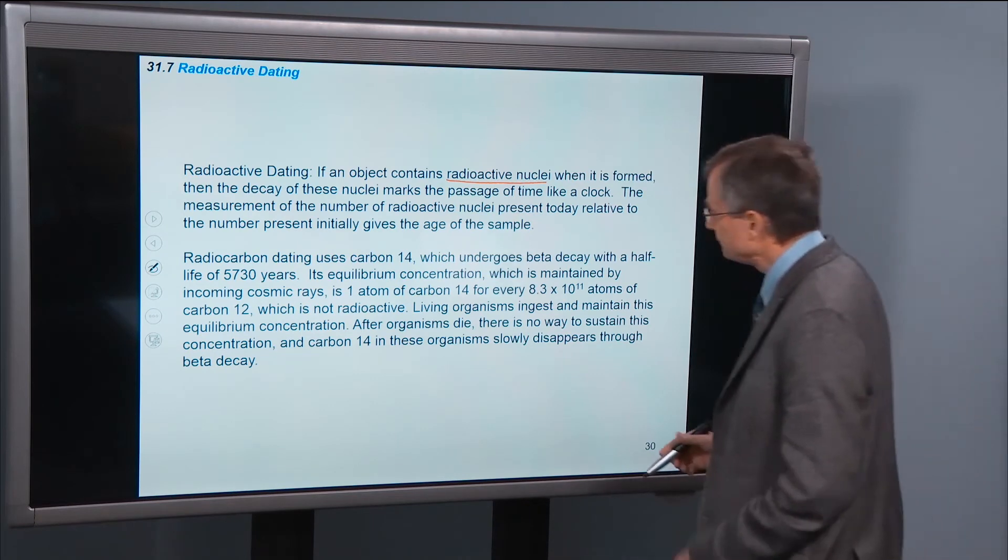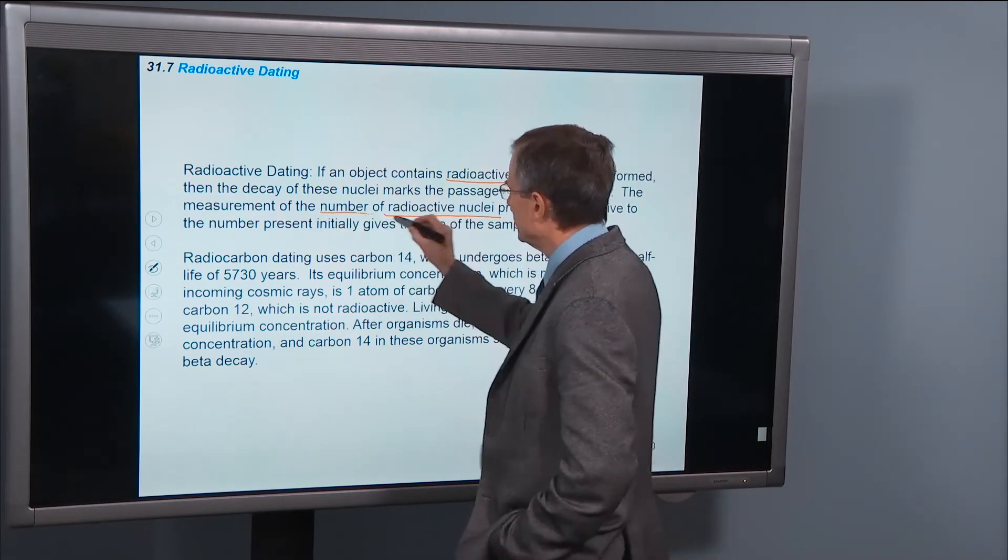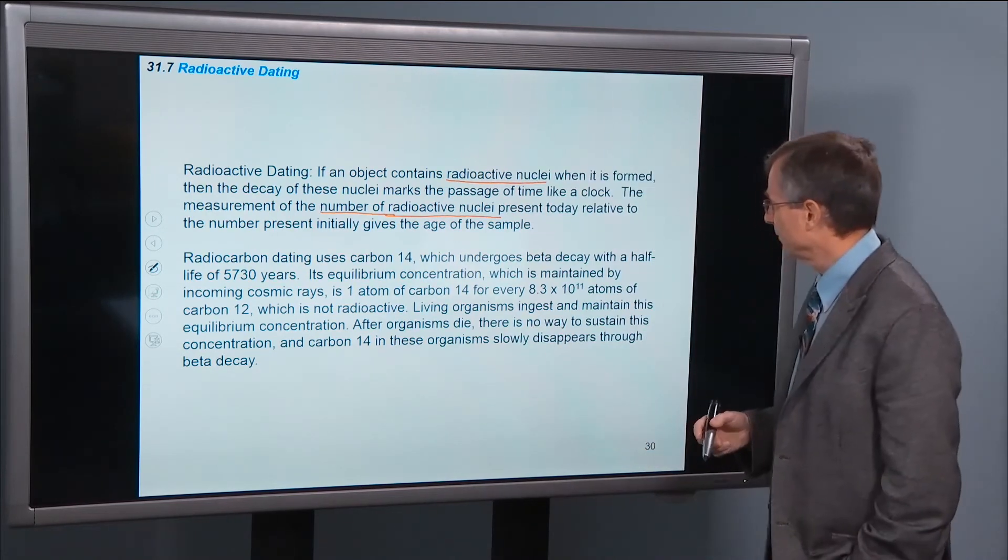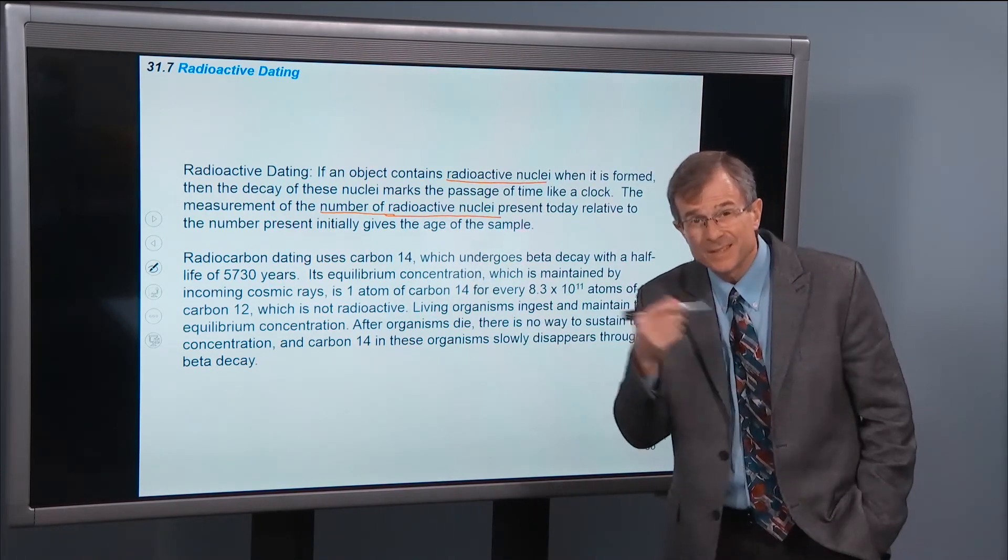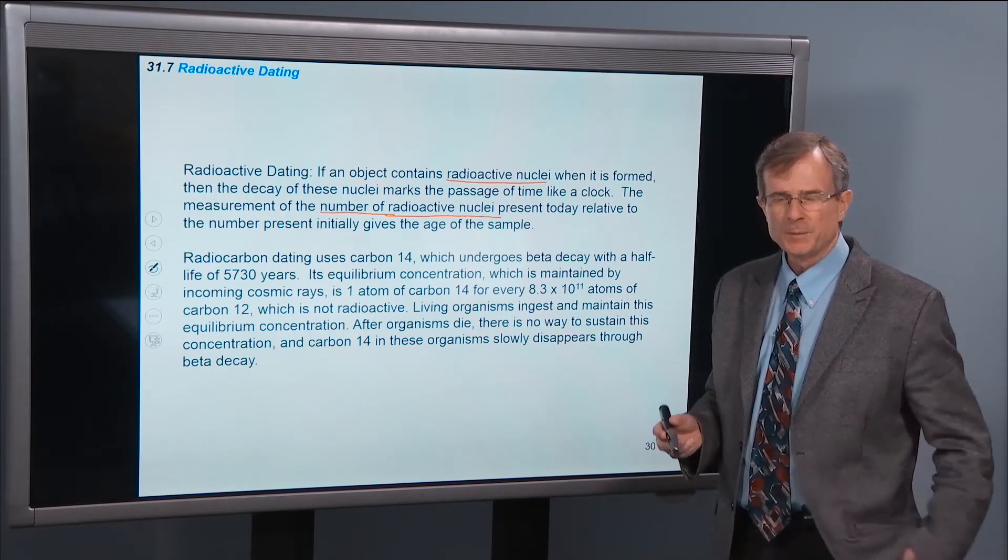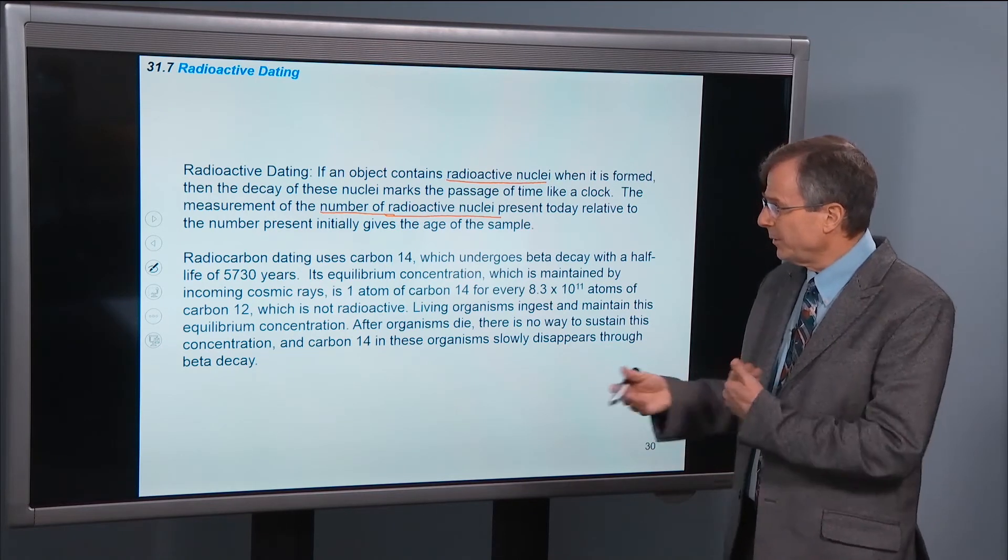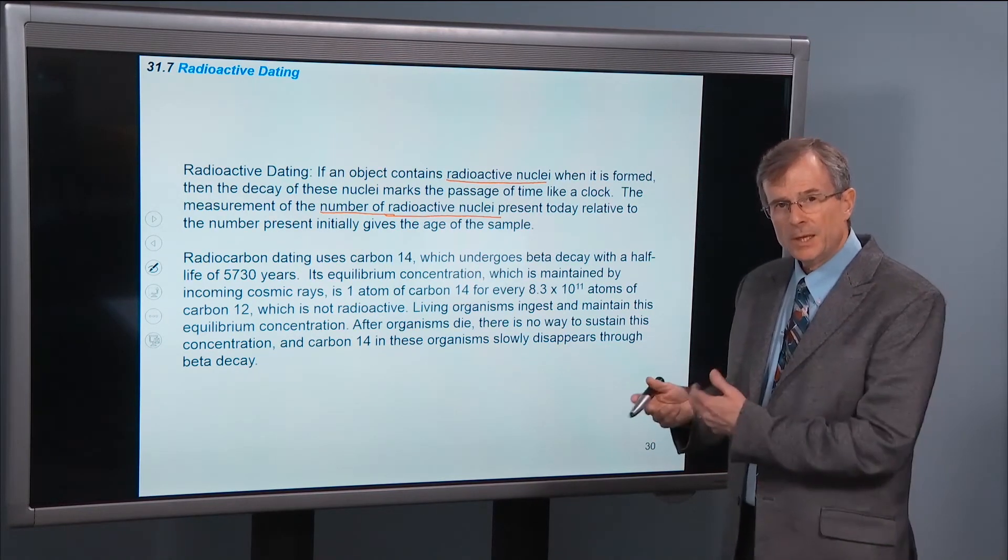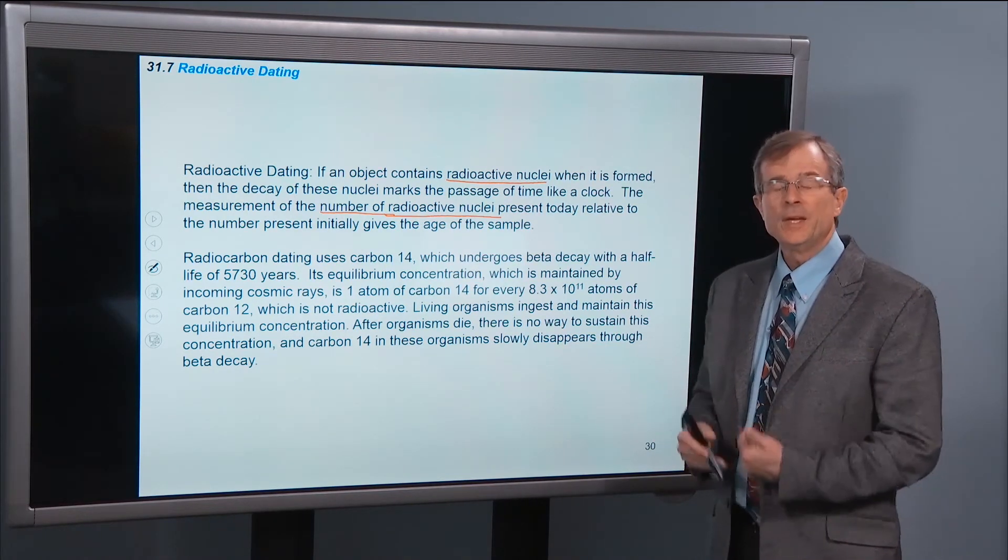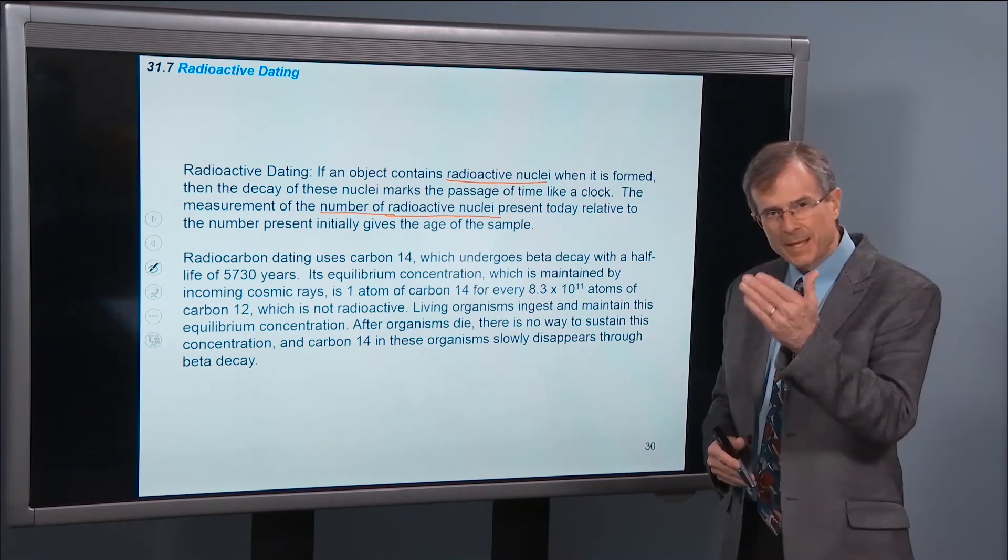So then those radioactive nuclei that were embedded in the rocks, or embedded in human organisms like us, then the decay of those nuclei marked the passage of time, just like the clock. And the measurement of the number of radioactive nuclei that are still present in that, relative to the number present initially, and that's a trick for some elements is knowing what the number was initially. But if you compare those two numbers, and you know the half-life, then you can back out the age of the object.